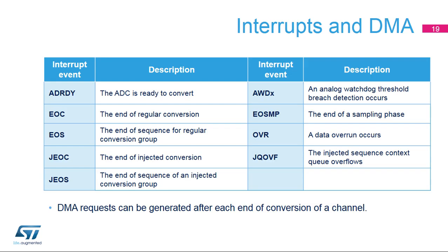Each ADC can generate nine different interrupts: ADC ready, end of conversion, end of sequence, end of injected conversion, end of injected sequence, analog watchdog, end of sampling, data overrun, and overflow of the injected sequence context queue.